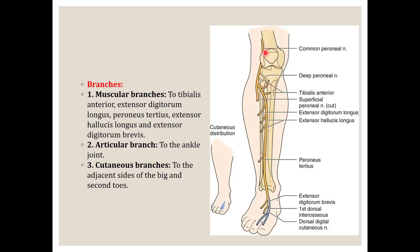The deep peroneal nerve supplies all muscles of the anterior compartment: tibialis anterior, extensor digitorum longus, peroneus tertius, and extensor digitorum brevis. It gives an articular branch to the ankle joint. It also gives cutaneous branches to the adjacent sides of the big toe and the second toe. The dorsum of the foot is supplied by the superficial peroneal nerve, except for this area — the adjacent sides of the big toe and second toe — which is supplied by the deep peroneal nerve. This distinction is commonly tested in exams.